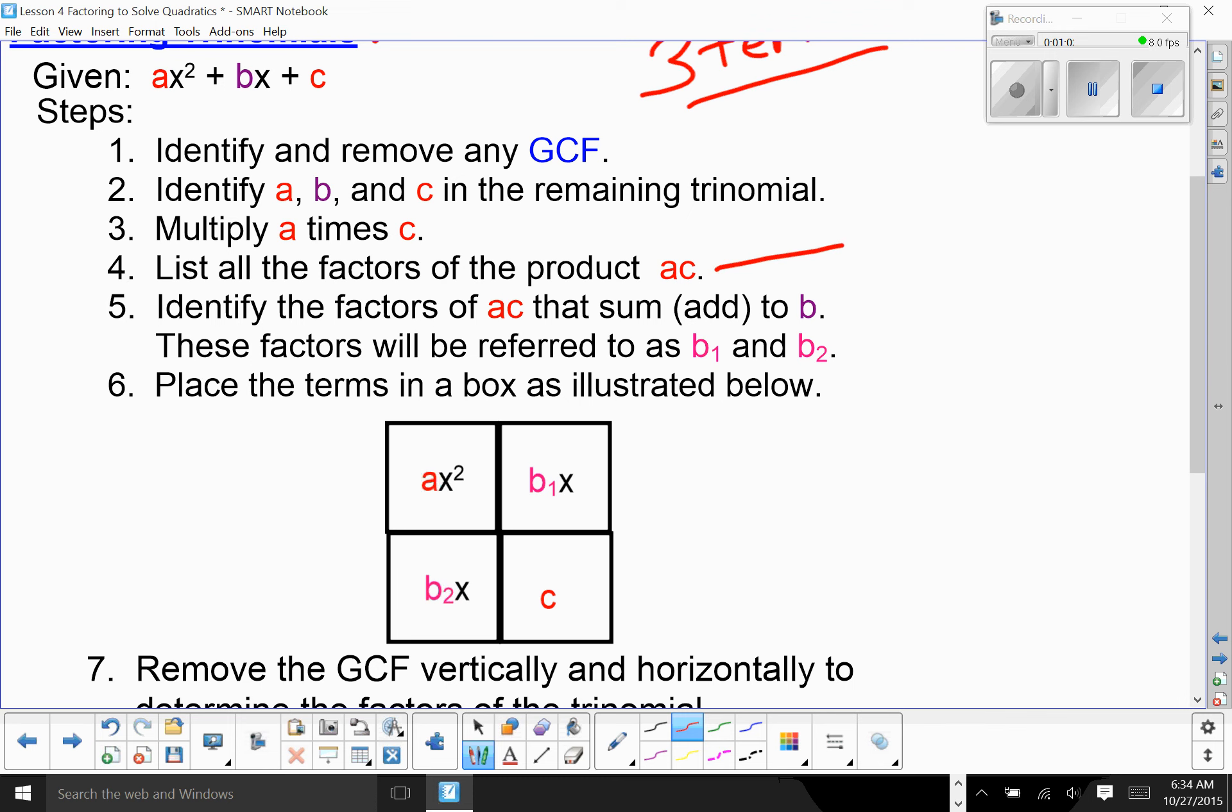List all the factors of the product AC. At least think about the list. What you need to do is identify the factors of AC that sum to B. So what you're looking for is you have A times C, B. They have to multiply to AC and they have to add up to B. This is where you have your B1 and your B2.